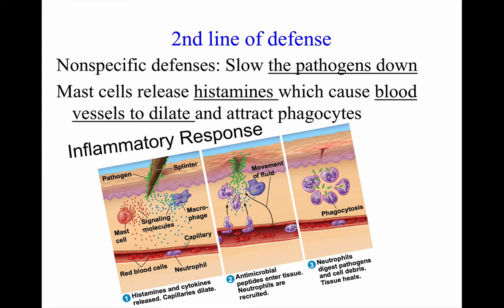Inflammatory response happens when you get a break in the skin, which causes certain types of cells — like mast cells and macrophages — to release certain chemicals. The mast cells release histamines, and those histamines help the blood vessels in the surrounding area to dilate. When blood vessels dilate, they become larger and more engorged with blood. This creates heat in the area, and many bacteria and viruses can't survive in that heat and can die. Dilation also allows other cells to squeeze through the blood vessels more easily, so they can go in and destroy any invading bacteria or viruses.